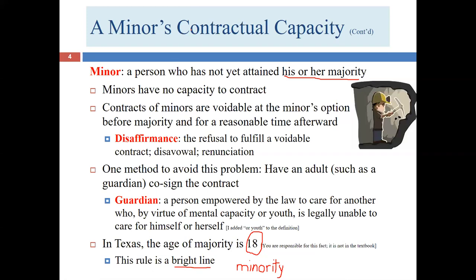Let's talk about the term 'voidable.' Contracts can be grouped into three categories. First, valid contracts — the garden variety contracts without problems; this is the expected outcome where parties do what they're supposed to do or face consequences for breach. Second, voidable contracts. Third, void contracts.